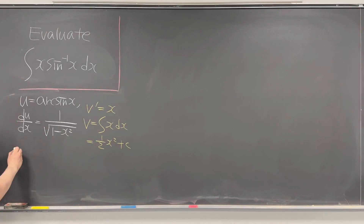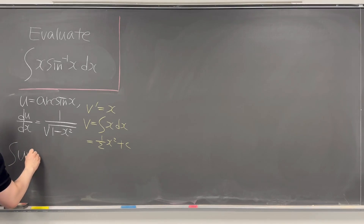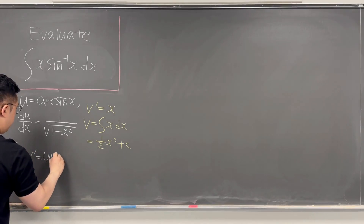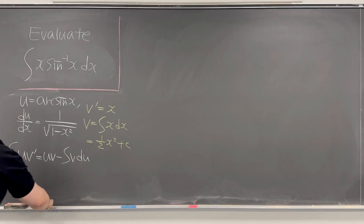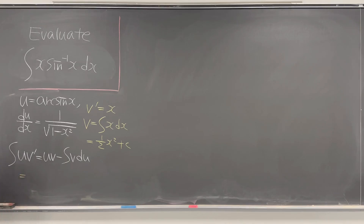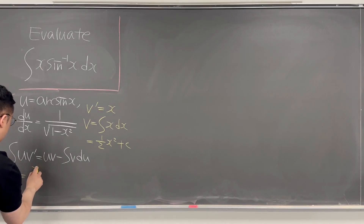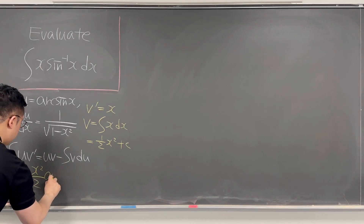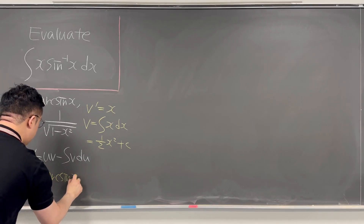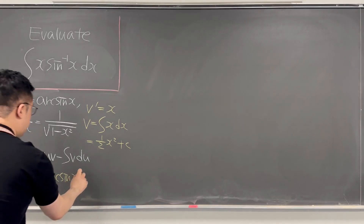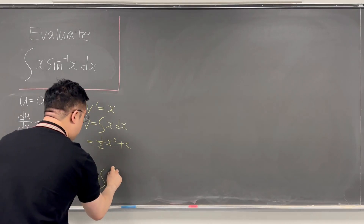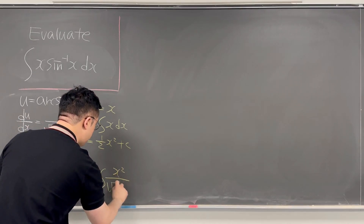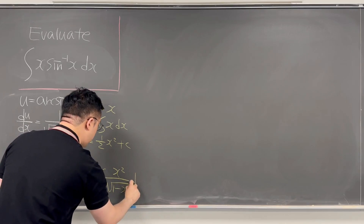So using integration by parts — the integral of u·v prime equals u·v minus the integral of v·du — we can rewrite this as x squared over 2 times arcsin(x), minus 1/2 times the integral of x squared over square root of 1 minus x squared, dx.